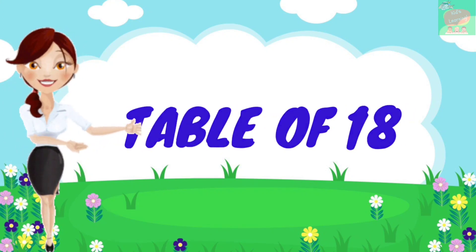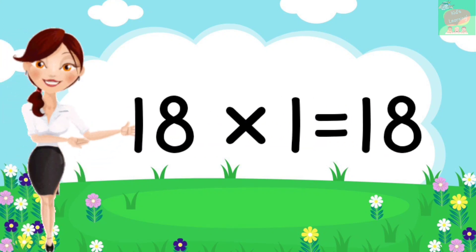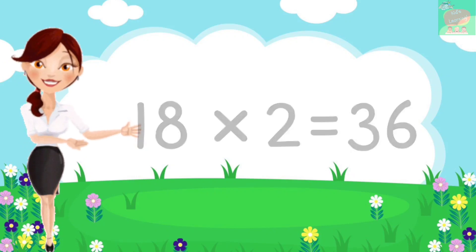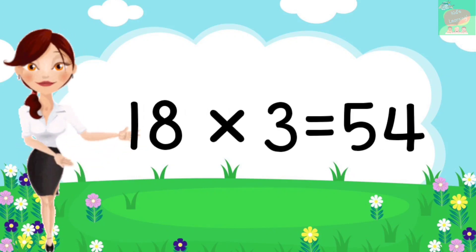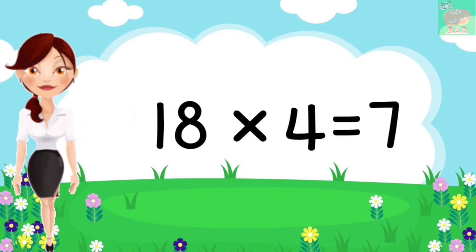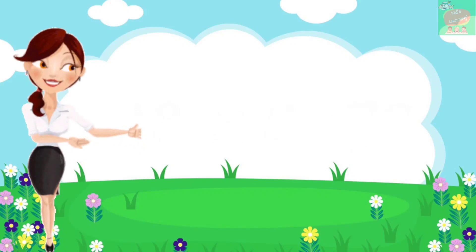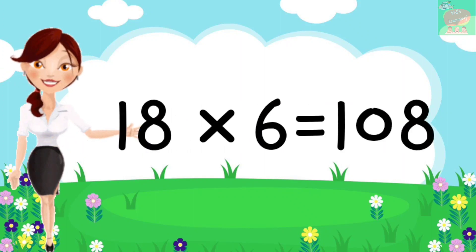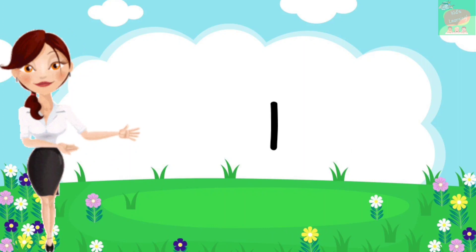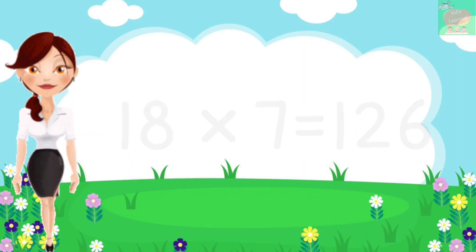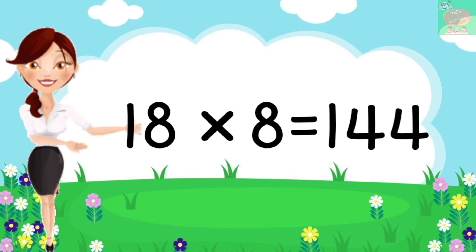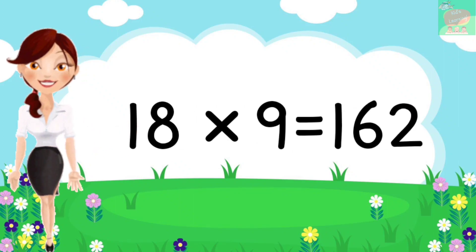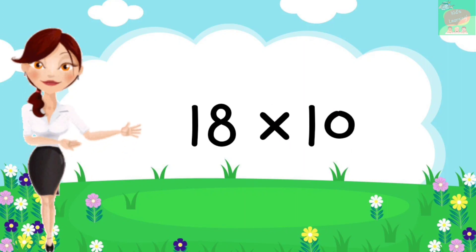Today we will learn the table of 18. 18 ones are 18, 18 twos are 36, 18 threes are 54, 18 fours are 72, 18 fives are 90, 18 sixes are 108, 18 sevens are 126, 18 eights are 144, 18 nines are 162, 18 tens are 180.